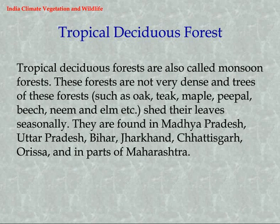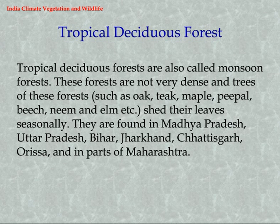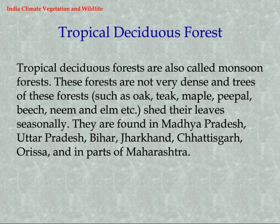Tropical Deciduous Forest: Tropical Deciduous Forests are also called monsoon forests. These forests are not very dense, and trees such as oak, teak, maple, peepal, neem, elm, etc. shed their leaves seasonally. They are found in Madhya Pradesh, Uttar Pradesh, Bihar, Jharkhand, Chhattisgarh, Orissa, and in parts of Maharashtra.